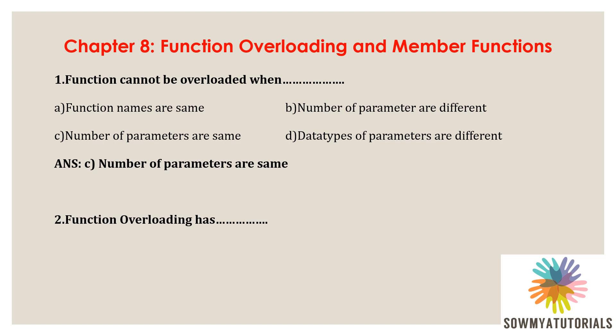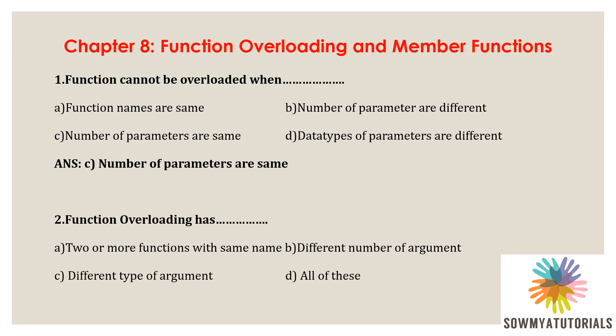The next question is: function overloading has? Options are: A) two or more functions with the same name, B) different number of arguments, C) different types of arguments, D) all of these. Function overloading has two or more functions with the same name, differing in the number of arguments and differing in the types of arguments. So the correct option is D — all of these.